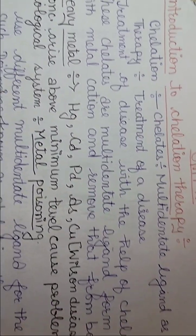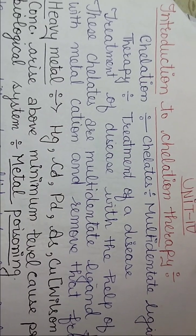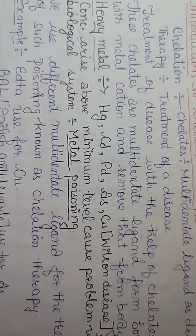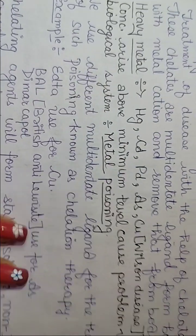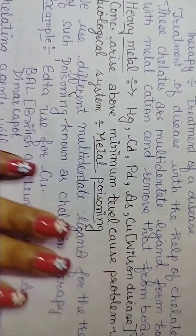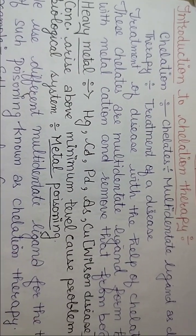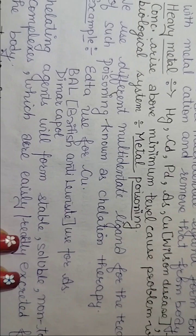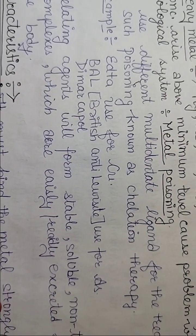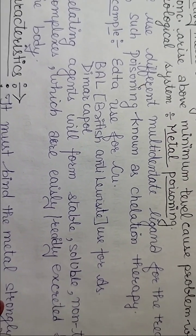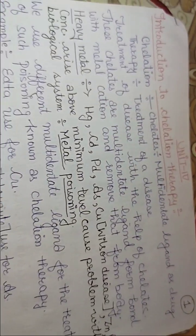Now what do these chelates do? They bind and remove metal ions from the body through complex formation. EDTA is used for copper, and British anti-luisite is used for arsenic and dimer copper. We have seen 3 or 4 examples in the previous video.